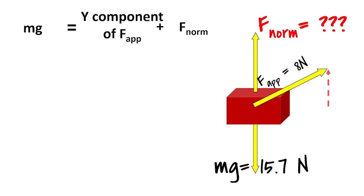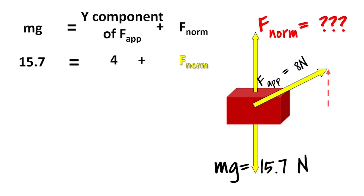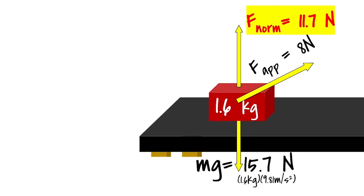We're trying to get the normal force by itself. It's being added to 4. So we need to get rid of the 4 by subtracting 4 on both sides. 15.7 minus 4 is equal to 11.7 newtons. That's the normal force. That's how much force is acting up on this grid from the table. Not so bad, right?